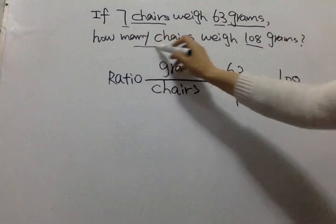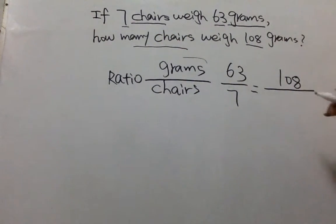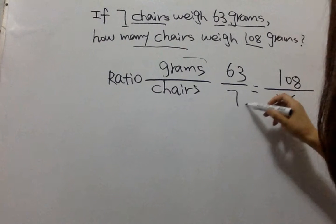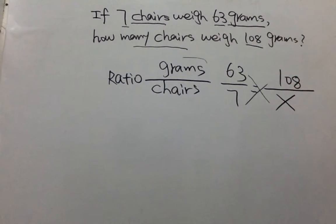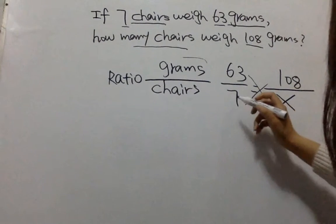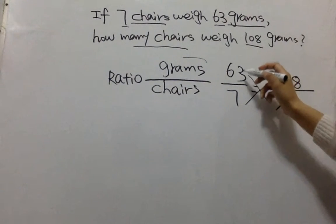And then how many chairs we don't know because this is an unknown variable, so we just put an X. By solving that, we just cross multiply. Before cross multiplying, we need to simplify it if we can.